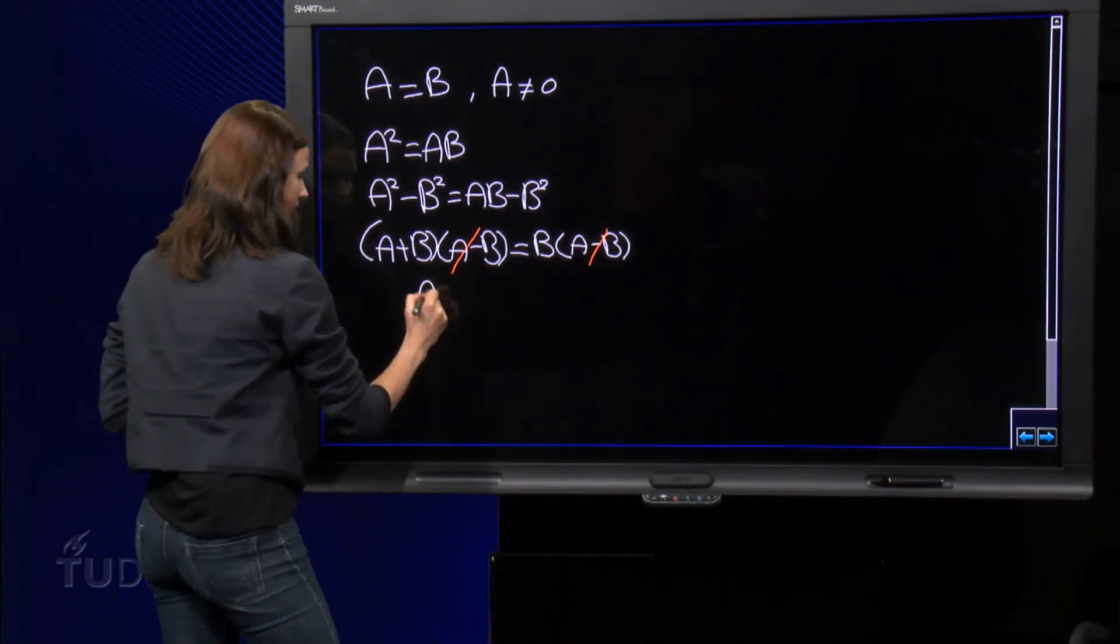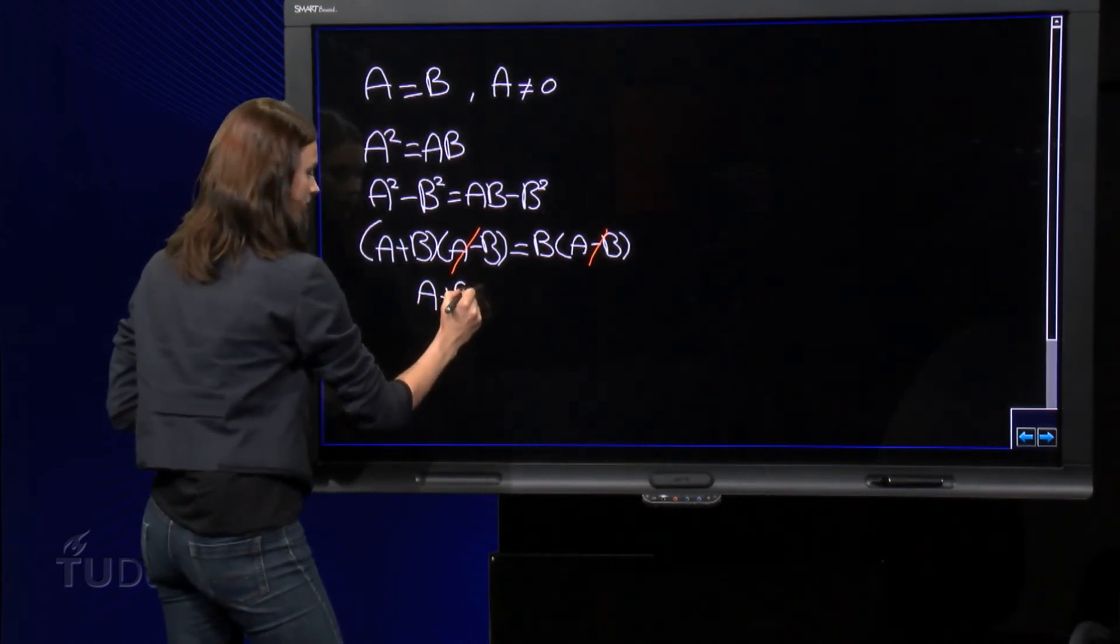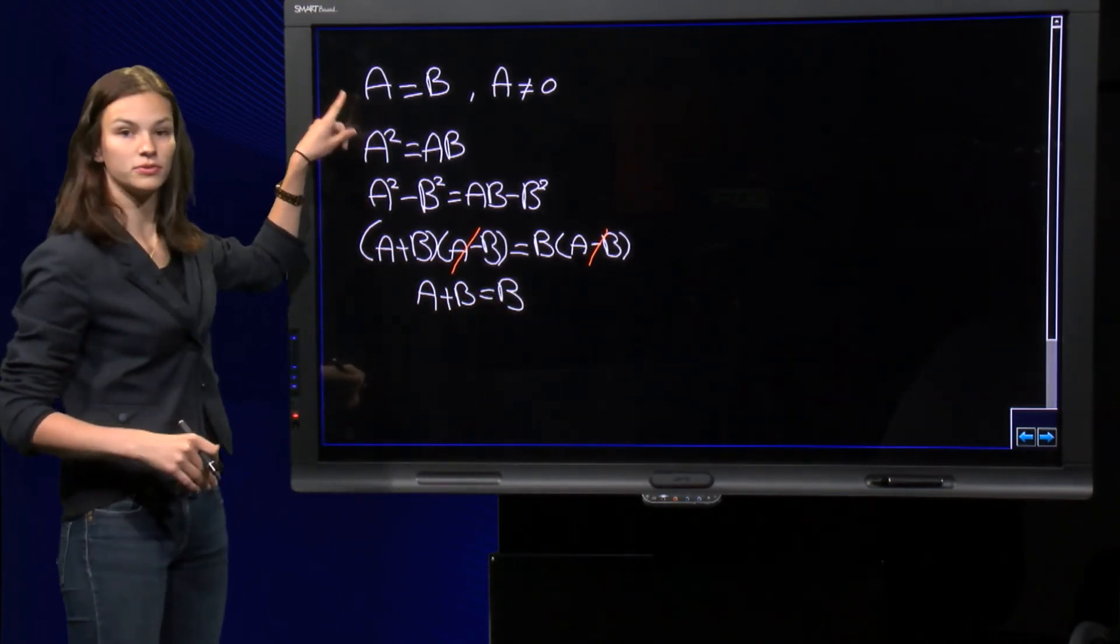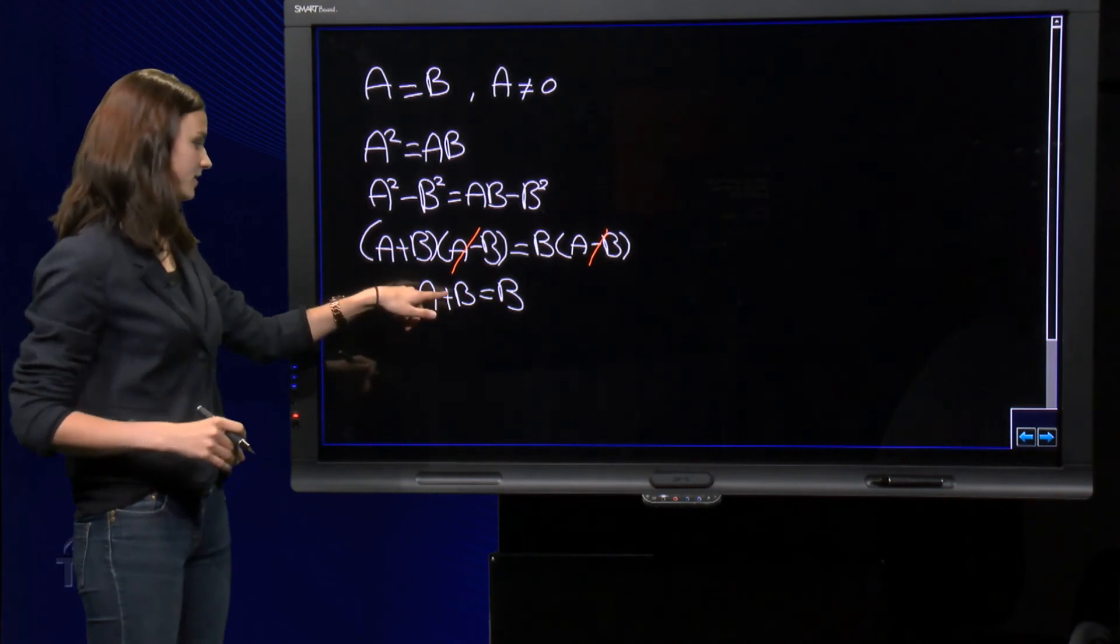So, now we have A plus B equals B and because we assumed A equals B, we replace B by A.